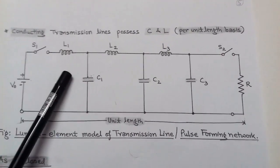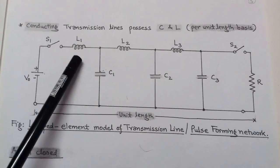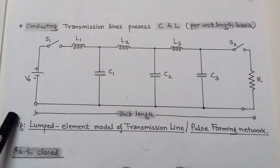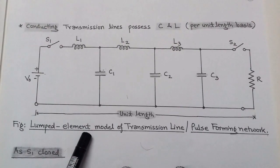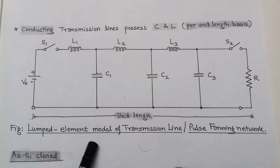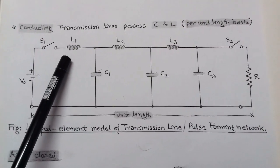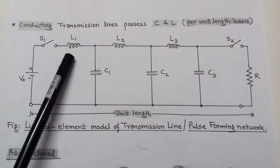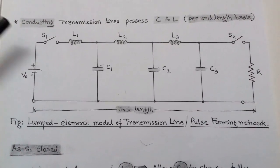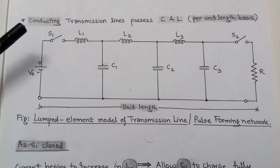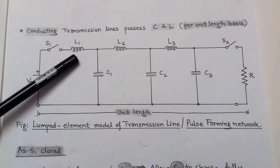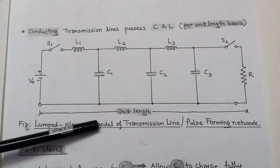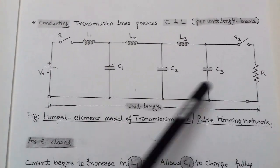We can construct a transmission line model using capacitors and inductors. Here we see a model of a unit length of the transmission line. The basic elements are an inductor and a capacitor — the transmission line is replaced by energy-storing elements: capacitor and inductor. The inductor is connected in series while the capacitor is connected in shunt. The source is a voltage source and the load is resistance R.